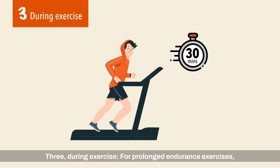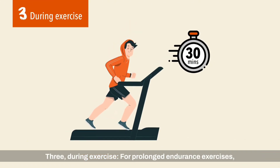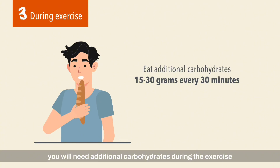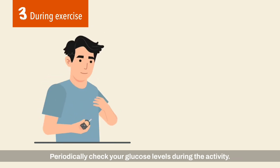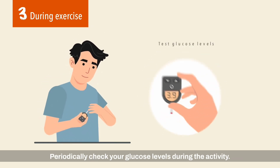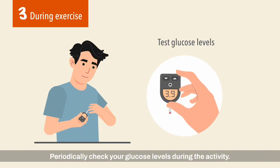During exercise: for prolonged endurance exercises, you will need additional carbohydrates during the exercise in addition to insulin dose reduction. This is typically 15 to 30 grams every 30 minutes without insulin. Periodically check your glucose levels during the activity.